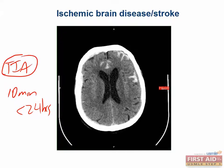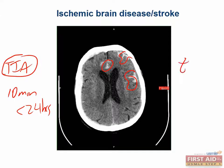You can see ischemic brain injury on CT after 24 hours, or on MRI within 30 minutes. The real reason to do this imaging is to rule out hemorrhagic stroke in order to safely give TPA.